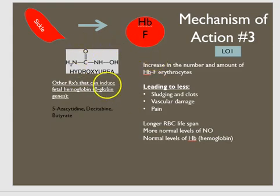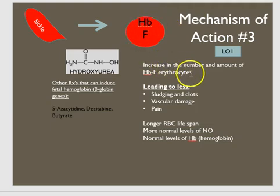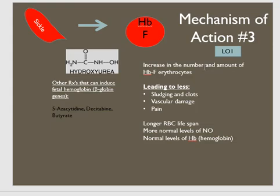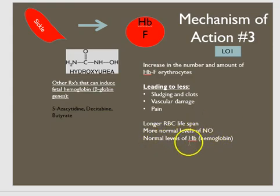The third mechanism involves the induction of fetal hemoglobin. When you increase the number and amount of fetal hemoglobin-positive erythrocytes, there is less sludging and less accumulation of clots. This reduces vascular damage and the frequency and incidence of pain. The outcome is a longer lifespan of the red blood cell, more normal levels of nitric oxide, and normal hemoglobin levels, which is beneficial for these patients.